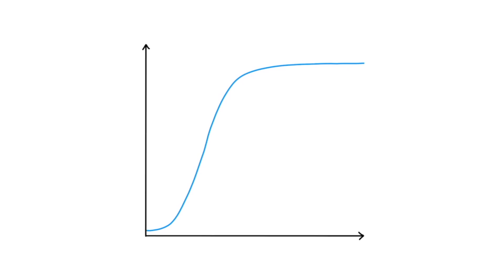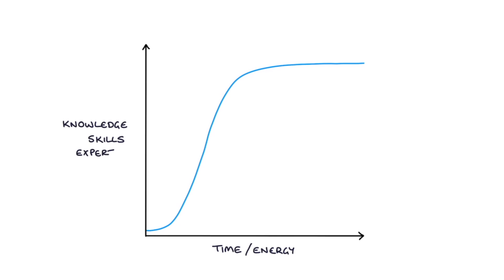The learning curve can be represented with a simple graph. On the x-axis is the time or energy that's spent trying to learn a topic. On the y-axis, you have the accumulation of knowledge, skills, or expertise in that topic area. Essentially, the y-axis represents learning.